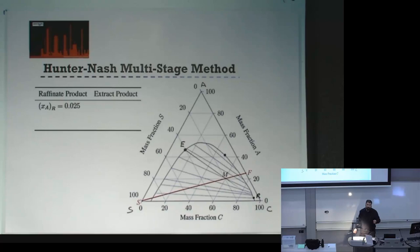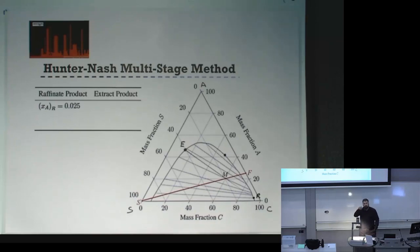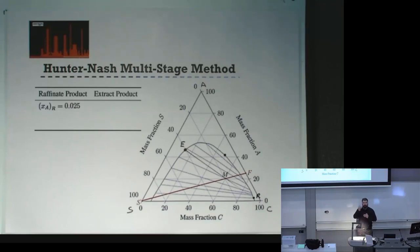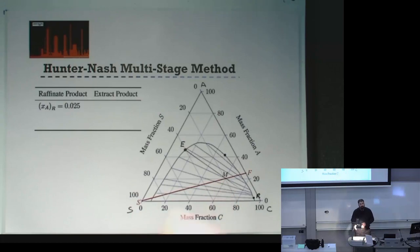To calculate where M is, we do exactly the same as last week — we plot point F, plot point S, and then either do a mass balance on our components to find the composition of M, or because M must lie on the FS line, we can use the lever-arm rule to find the ratio of line lengths FM to MS to find where M sits on that line.